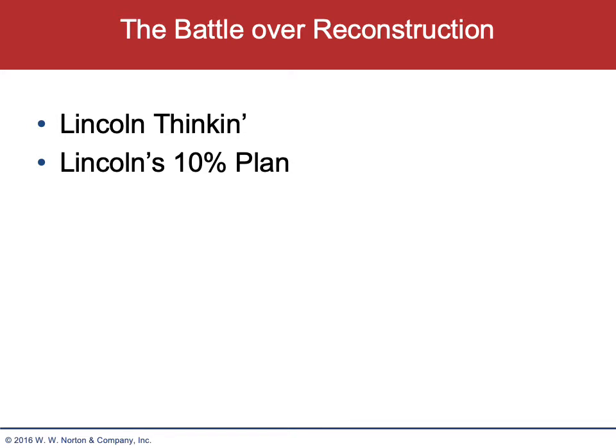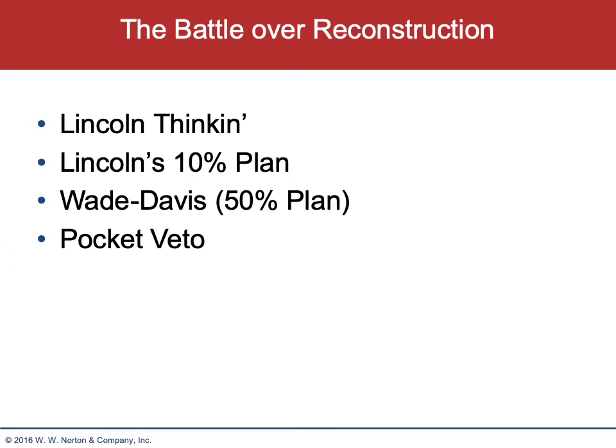Congress didn't view it that way, and proposed something called the Wade-Davis Bill. When Tennessee, Arkansas, and Louisiana met the guidelines under Lincoln's 10% plan, Congress refused to accept them, stating that Reconstruction was a legislative, not an executive function. Congress proposed the Wade-Davis Bill — also called the 50% plan — which called for even more stringent demands on the South. But this was vetoed by Lincoln using an interesting tactic called a pocket veto.